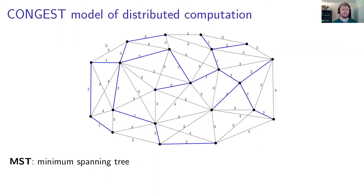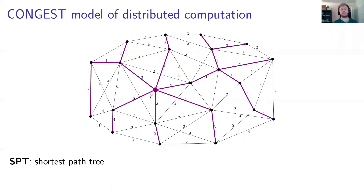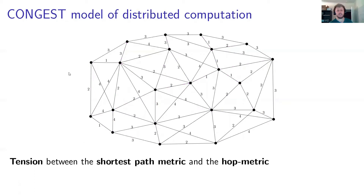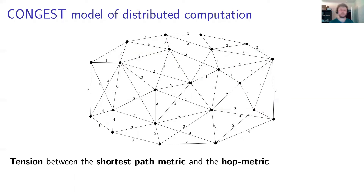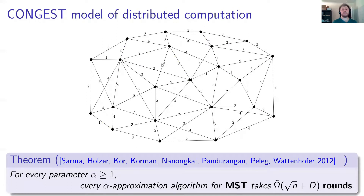One example will be the MST and the spanning tree. Another one is, say, if you have some root vertex r, to compute the shortest path tree, SPT, with respect to this vertex. As you can see, there's actually some tension between the shortest path metric and the hop metric. From one hand, we have the shortest path metric with respect to these weights, which is the actual metric we care about. And on the other hand, we have the hop metric, which is the one we use to perform the computation, and they might differ a lot. Indeed, Sarma et al. showed that actually even approximating the MST is very hard in this case.